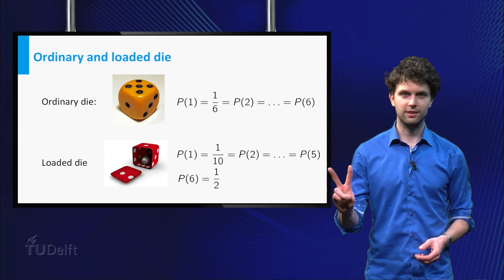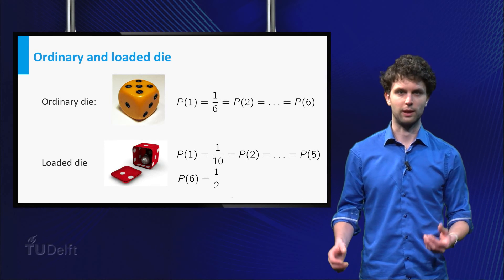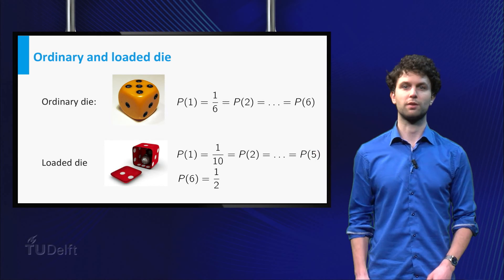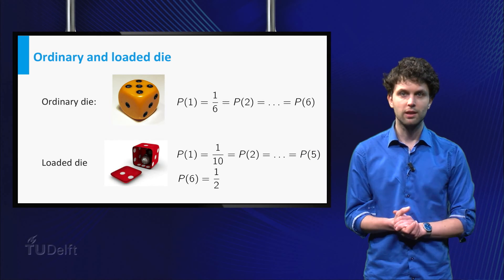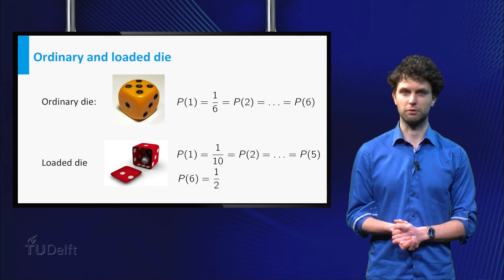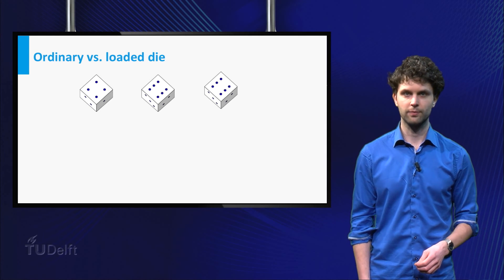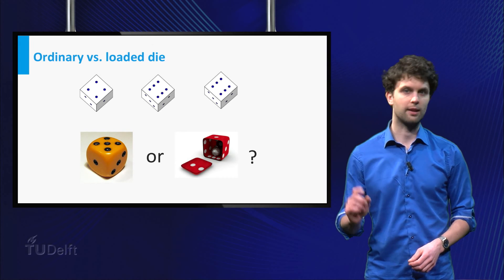Suppose I have two dice, one ordinary die and a loaded one. For the loaded one, the probability of getting six is five times as much as for the other sides. Now, I choose one die and throw three times. This gives first the four and then two sixes. Can you know for certain which die I have thrown?